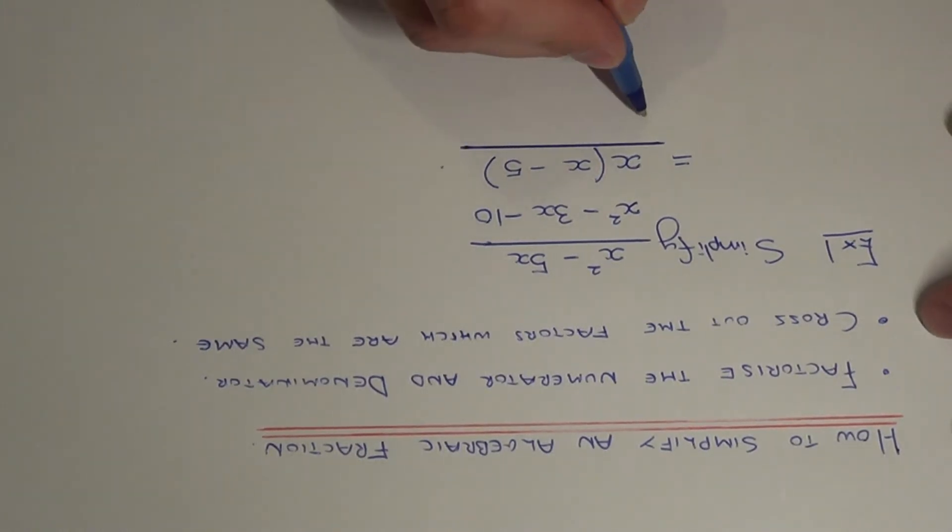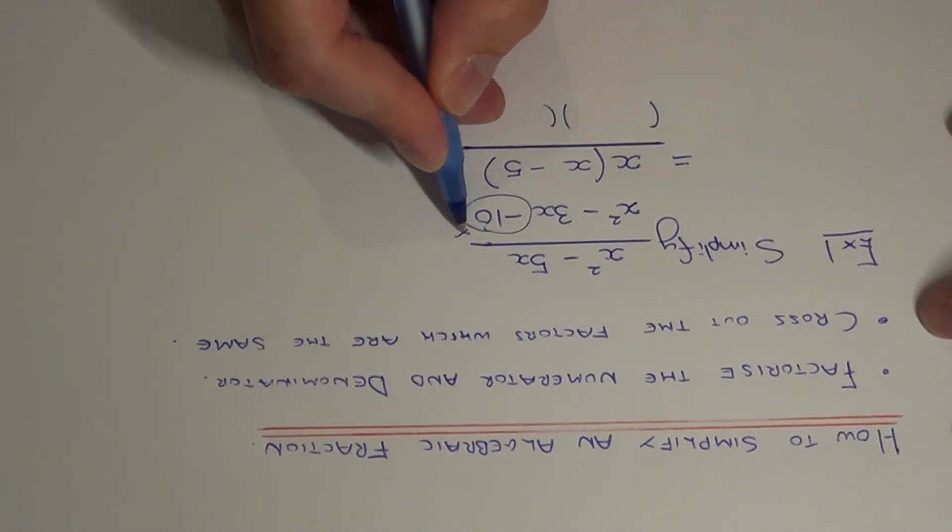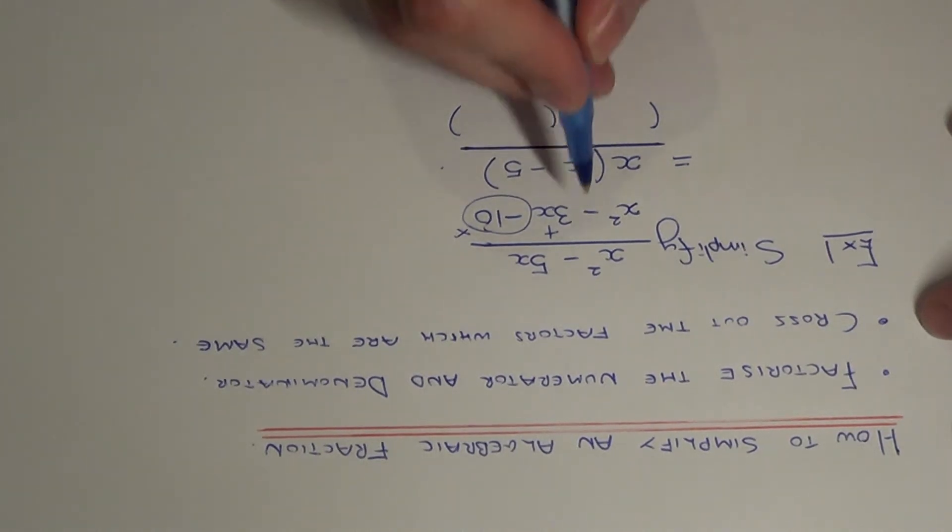So we need to look for a pair of numbers which multiply to give minus 10 and add to give you minus 3.